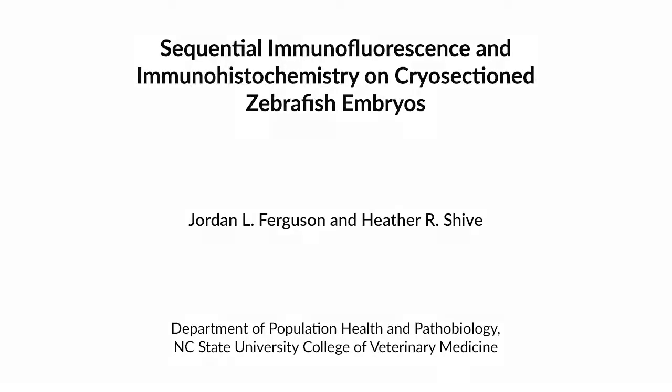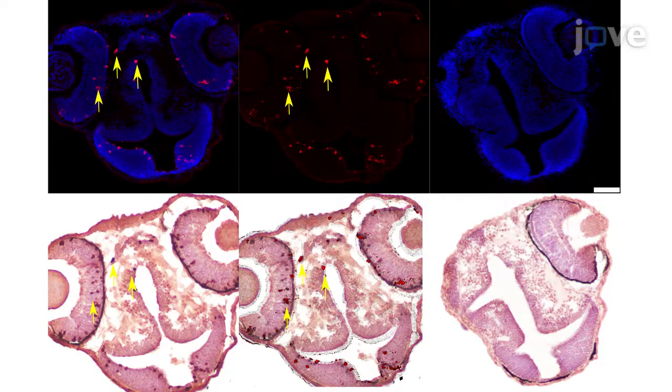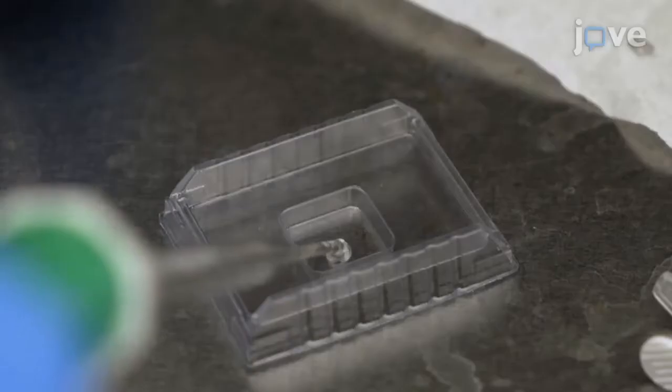This protocol demonstrates a novel procedure for sequential immunofluorescence and immunohistochemistry on cryosections from early-stage zebrafish embryos, which enables precise co-localization analyses in specific cell populations.